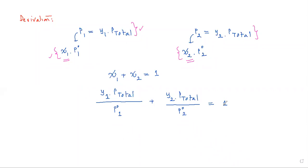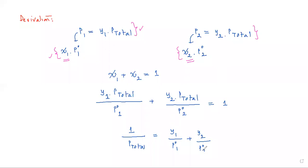Now let us take P_total to the other side. That way it can be written as 1 by P_total is equal to y1 by p°1 plus y2 by p°2. From this, we can solve some problems based on graphs.